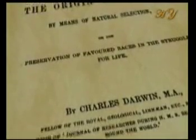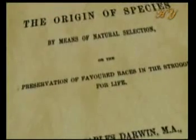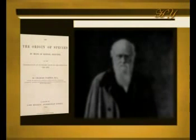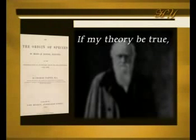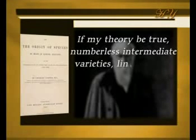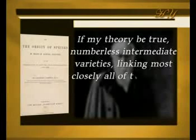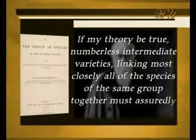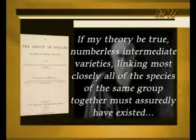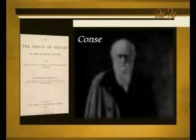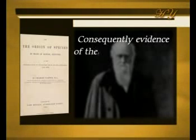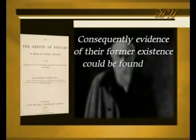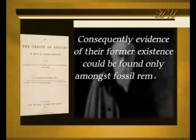Darwin, who was well aware of this fact, said in his book The Origin of Species: "If my theory be true, numberless intermediate varieties linking most closely all of the species of the same group together must assuredly have existed. Consequently, evidence of their former existence could be found only amongst fossil remains."